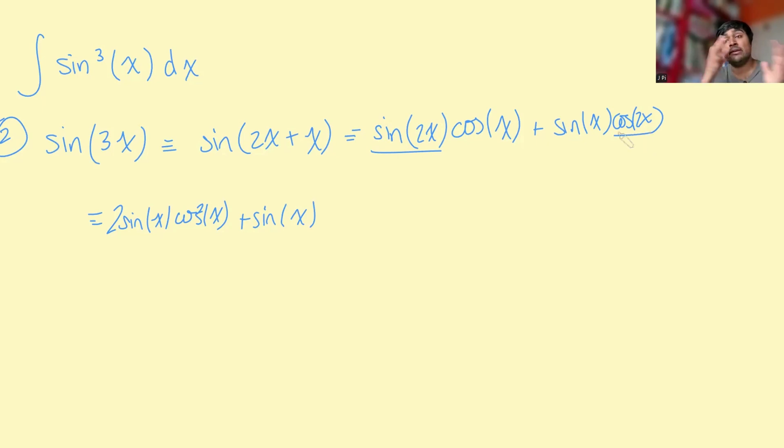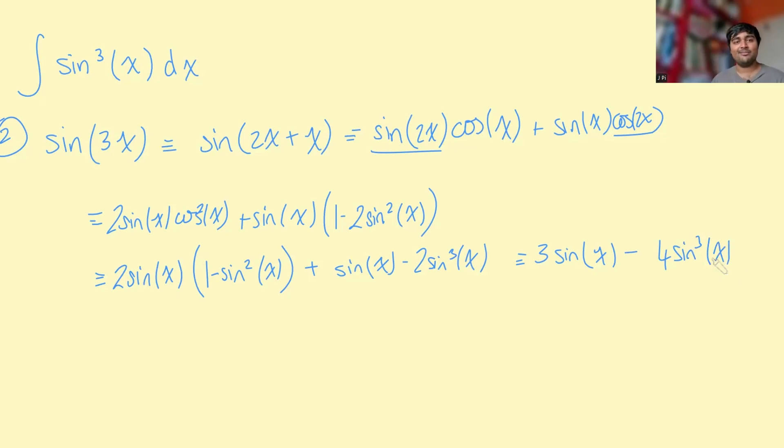Well, I'm going to use the one which is 1 minus 2 sine squared x. So 1 minus 2 sine squared x. Now, if I replace this cos squared x with 1 minus sine squared x, this is 2 sine x, 1 minus sine squared x plus, and then this thing here, if I expand it, is sine x minus 2 sine cubed x. Now, if I just expand this term here and simplify, this will turn out to be 3 sine x minus 4 sine cubed x.